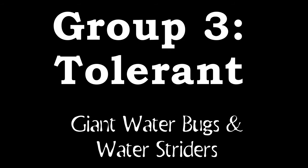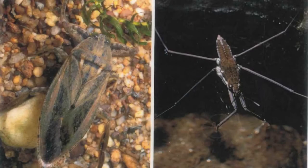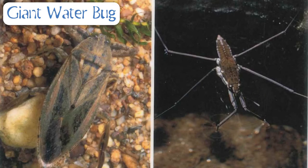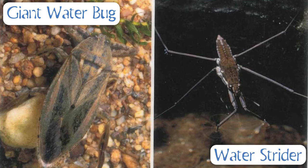Lastly, I'm going to talk about some organisms in group three, or the tolerant macroinvertebrates. The picture on the left is a giant water bug. They spend most of their time underwater and can actually form an air bubble next to their body, which helps them obtain oxygen while still submerged. The picture on the right is a water strider. They spend most of their time on the surface of the water and have special little hairs on their legs that allow them to skate across the surface without ever breaking it.